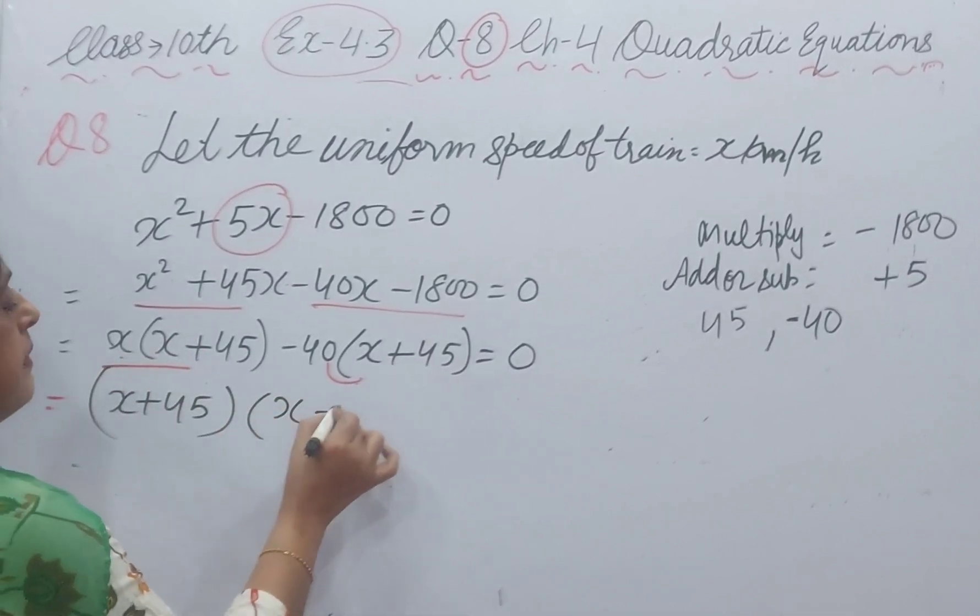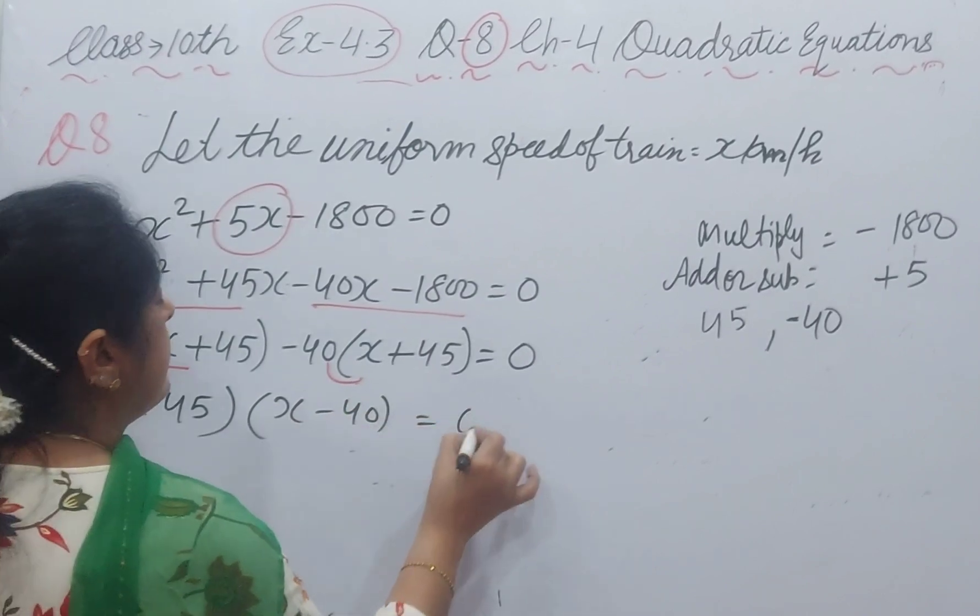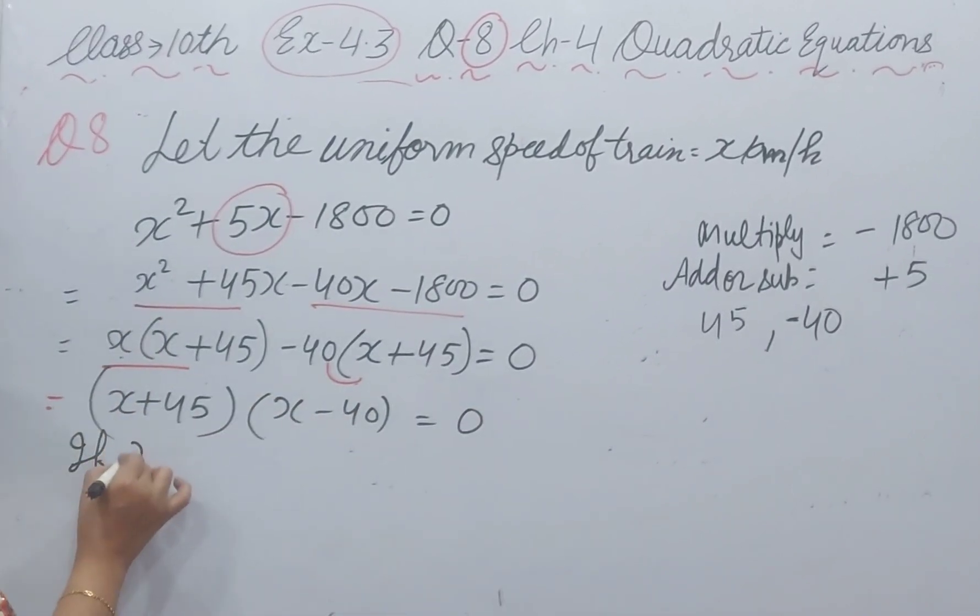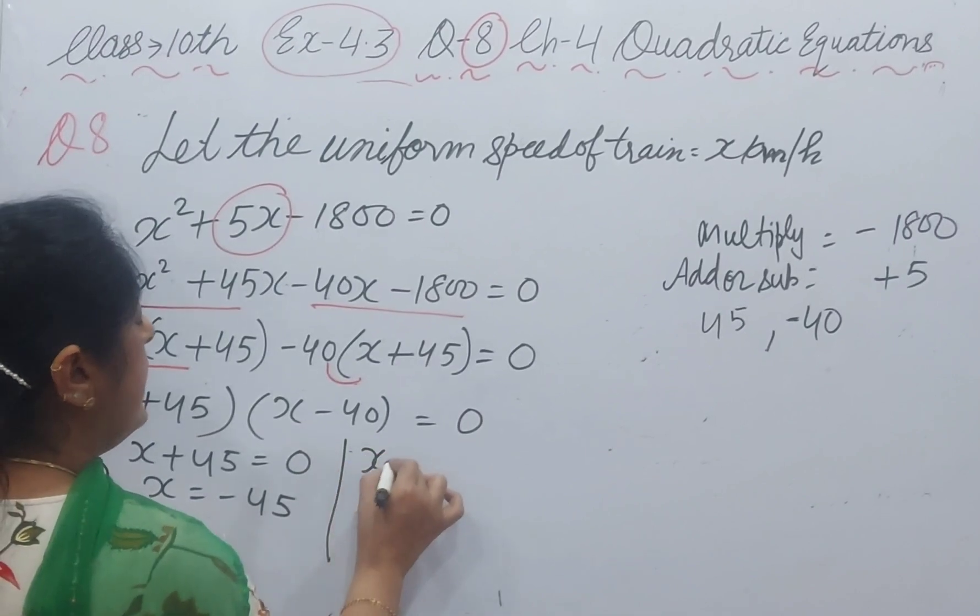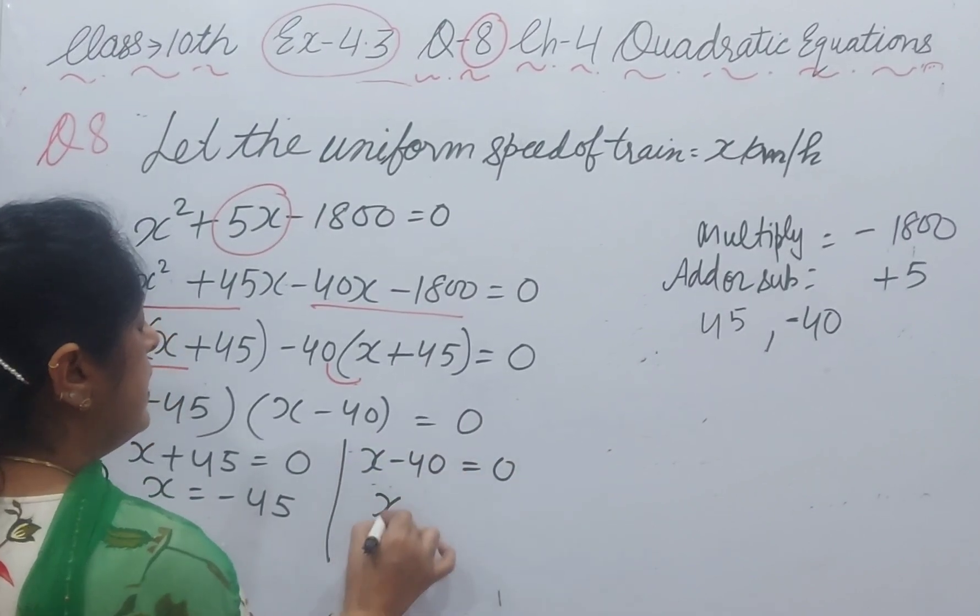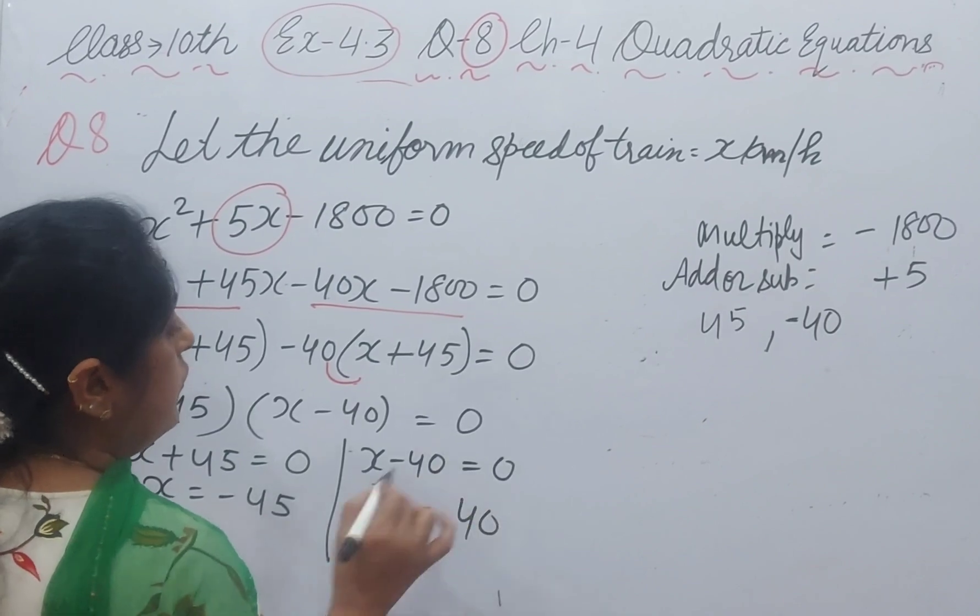And here x minus 40 is left. If x plus 45 is 0, x value is minus 45. If x minus 40 equal to 0, x equal to 40.